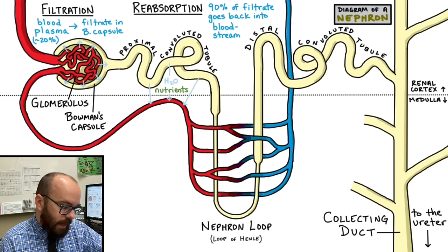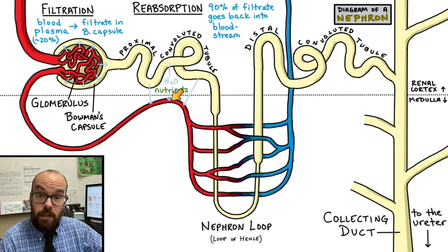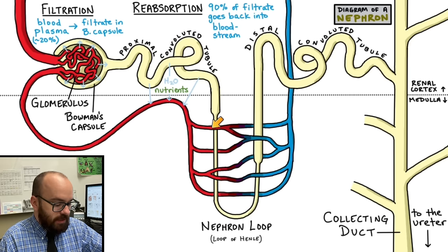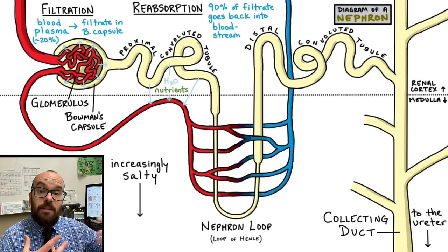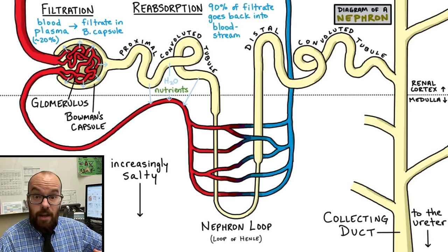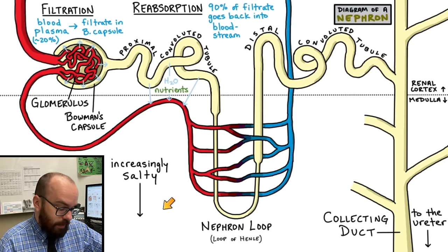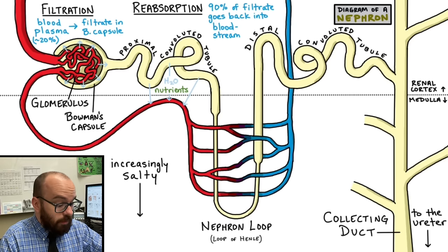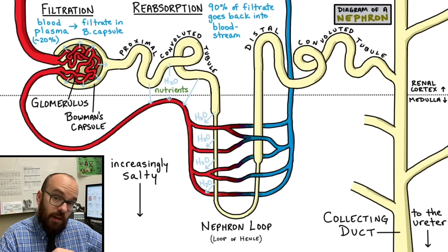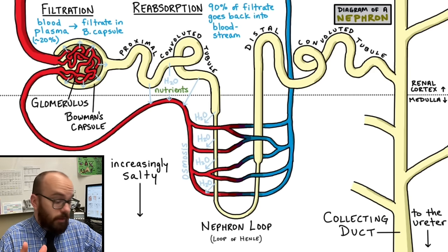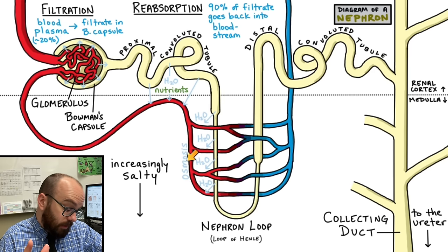A lot of the important nutrients we need — such as sugars and vitamins — diffuse out of the proximal convoluted tubule back into the blood vessels so we don't urinate out that good stuff. As the nephron loop descends into the medulla, it gets increasingly salty — a lot more sodium, chloride, and other ions in that area. Salt essentially attracts water, so as the nephron loop descends, water diffuses out of the nephron loop back into our blood vessels through osmosis. Water leaves the descending nephron loop, attracted to the saltiness of the medulla, and enters back into the bloodstream.